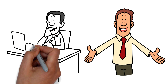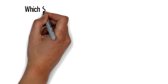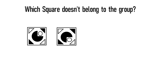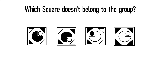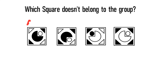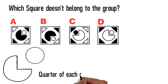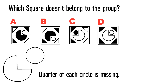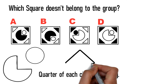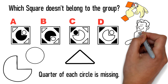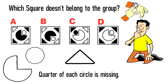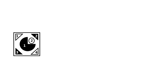Next, you need to determine which object does not belong to the group. You are presented with four different squares — choices A, B, C, and D — each containing two circles inside. In the large circle, a quarter is missing and replaced by a small circle. All squares also have triangles in the corners. Give yourself 5 to 10 seconds to see if you can come up with the answer.